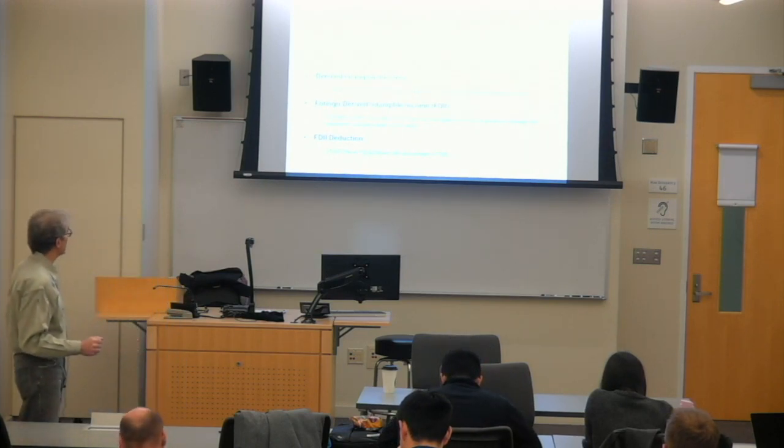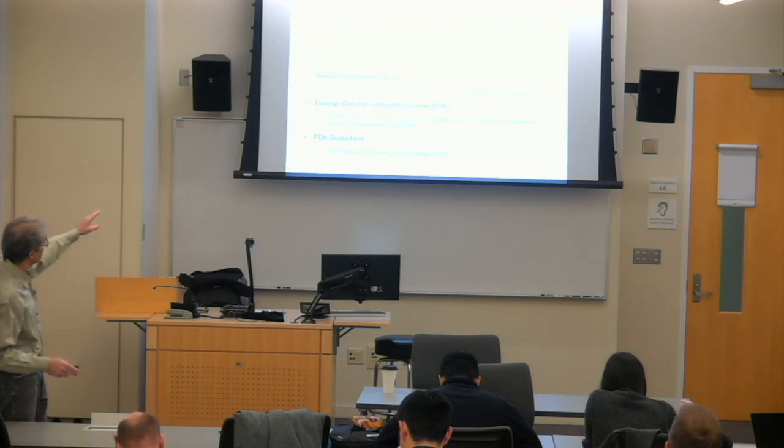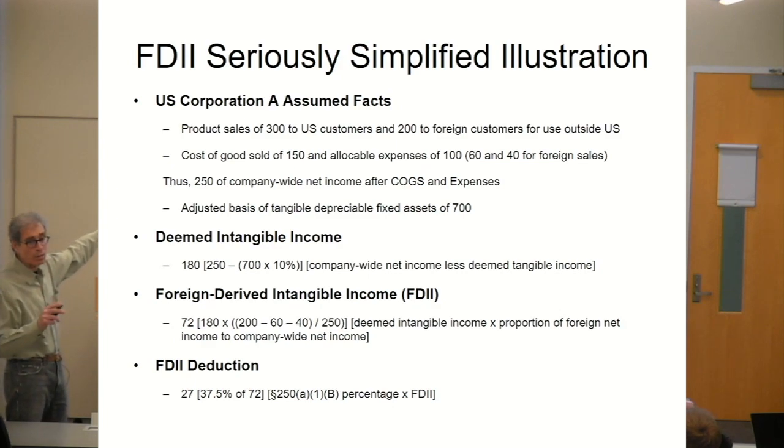What they did was they said we will calculate intangible by looking to the tangible assets. We will take the value of the tangible assets, multiply times 10%, and that will be a nominal or assumed return from the tangible assets and whatever activities are being conducted in connection with those assets. And everything else will be attributable to intangible.